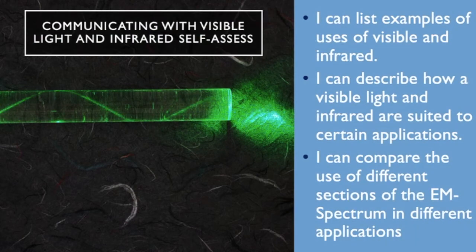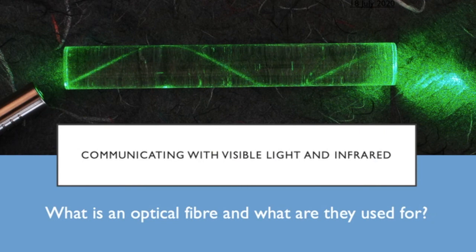These are the things you should be able to do: list examples of uses of visible and infrared; describe how visible light and infrared are suited to certain applications; and compare the use of different sections of the electromagnetic spectrum in different applications. So, what is an optical fiber and what are they used for? Optical fibers are a bundle of really thin, hair-like strands of glass which reflect light down them. They're used for endoscopes in medicine and for things like broadband and cable TV. That's been another physics video all about communicating with light and infrared - I've been Mr Baker, see you next time.